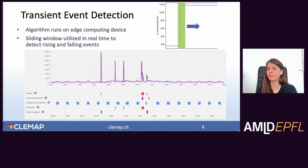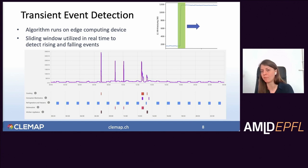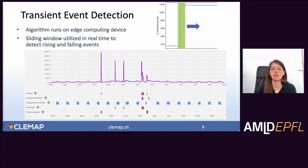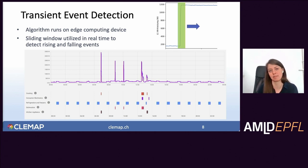The event detection model uses a sliding window and runs in real time on the sensors, so if you have something running on your meter points you can see it on the platform in real time. It detects both rising and falling events in real time on the edge computing device.